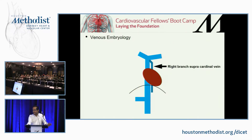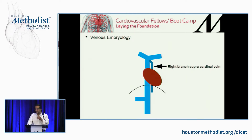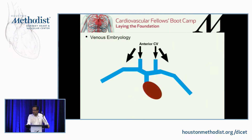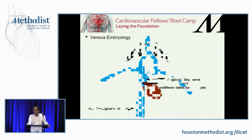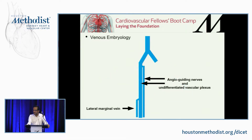The azygos vein is going to be formed by the right branch of the supracardinal vein. And, as I've mentioned already, from the chest up, the cardinal veins are going to be responsible for forming all the jugular, brachial, brachiocephalic, and innominate veins — all that kind of stuff — in order to get into the superior vena cava.